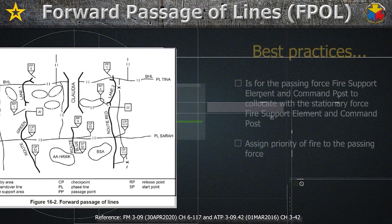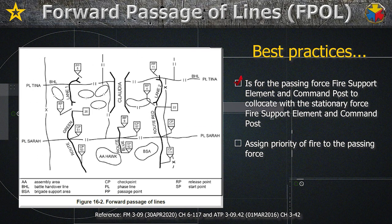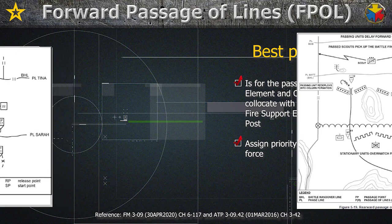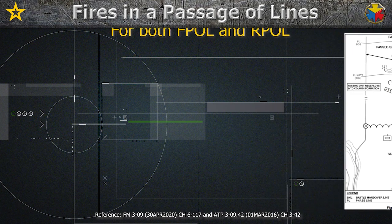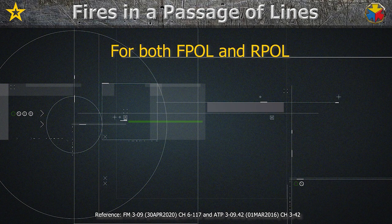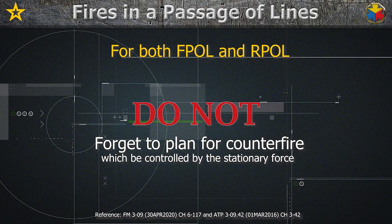For the forward passage of lines, a best practice is for the passing force fire support element and command post to co-locate with the stationary force fire support element and command post, and assign priority of fire to the passing force. For the rearward passage of lines, plan fires on passage points to be fired after friendly units have passed through, and consider the use of scatterable mines to close passage lanes. For both the forward and rearward passage of lines, do not forget to plan for counter fire, which will be controlled by the stationary force.